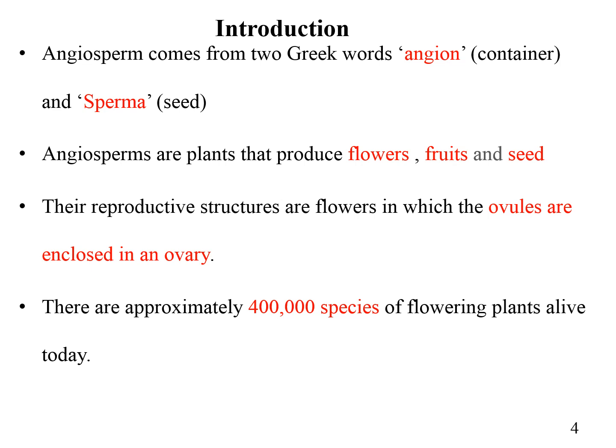The reproductive structure of angiosperm is the flower, in which the ovules are enclosed within the ovary. The ovule is the structure that contains the female reproductive cell.